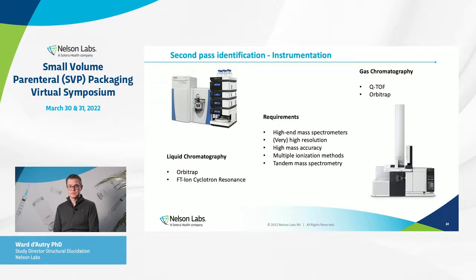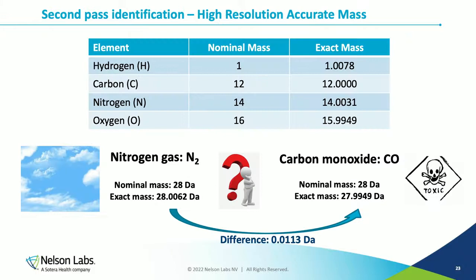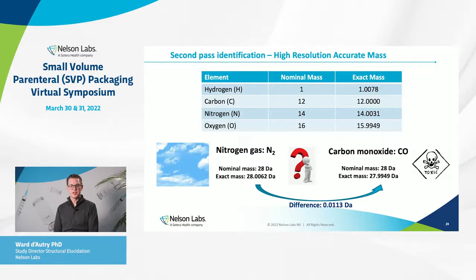For second-pass identification you need high-end mass spectrometers with very high resolution and high mass accuracy, capable of tandem mass spectrometry. For gas chromatography, quadrupole time-of-flight or orbitrap systems are used; for liquid chromatography, orbitrap or ion-cyclotron resonance systems. To illustrate high resolution: nitrogen gas N₂ and carbon monoxide CO both have a nominal mass of 28 daltons, but their exact masses differ by only 0.0113 daltons. At resolution 100 or 1,000 the two peaks overlap completely; only at resolution 10,000 can the two be distinguished — critical, since N₂ is harmless while CO is a lethal gas.